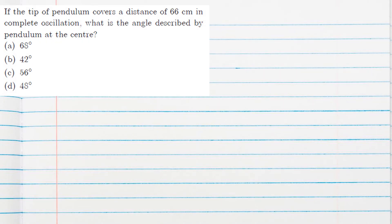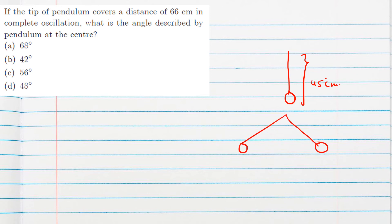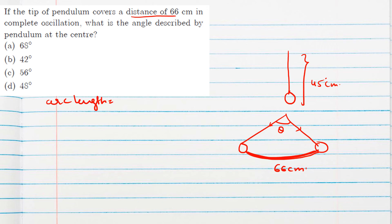The next question: the tip of the pendulum covers a distance of 66 cm. The pendulum length is 45 centimeters, and it oscillates between its mean and extreme positions. We are given the arc length (distance covered = 66 cm) and need to find the angle described. Using the arc length formula: (theta/360) × 2πr = 66, where r = 45 cm.